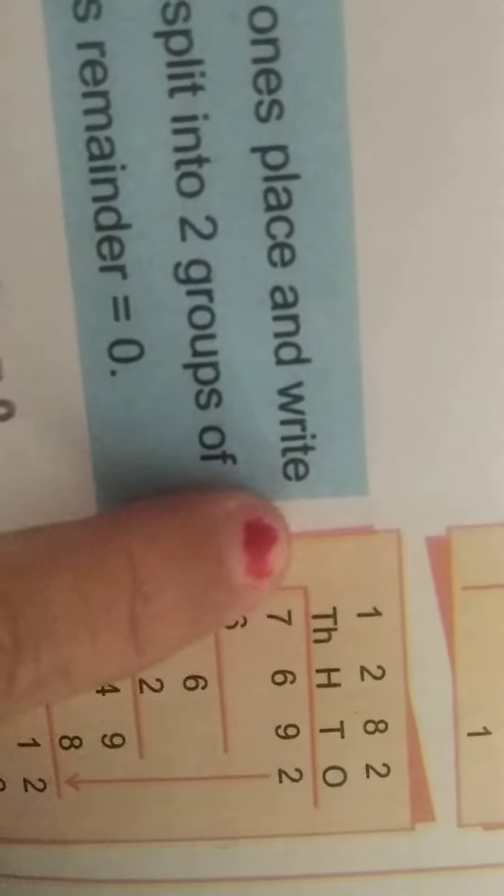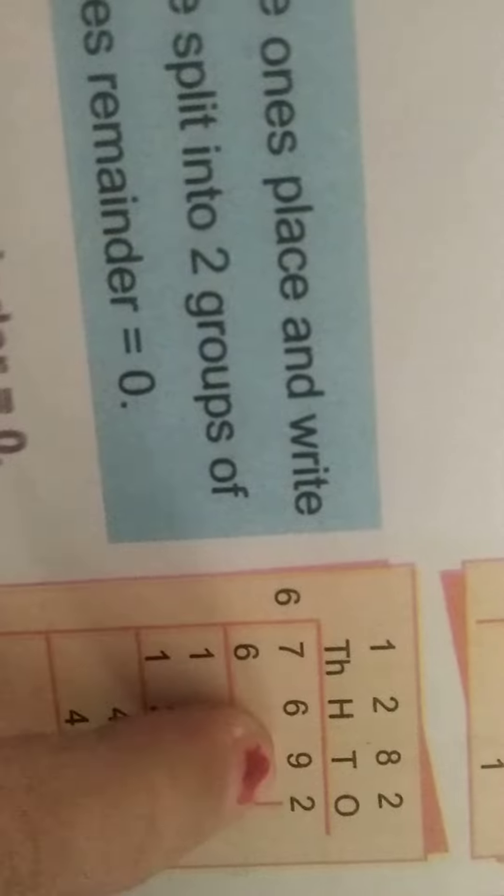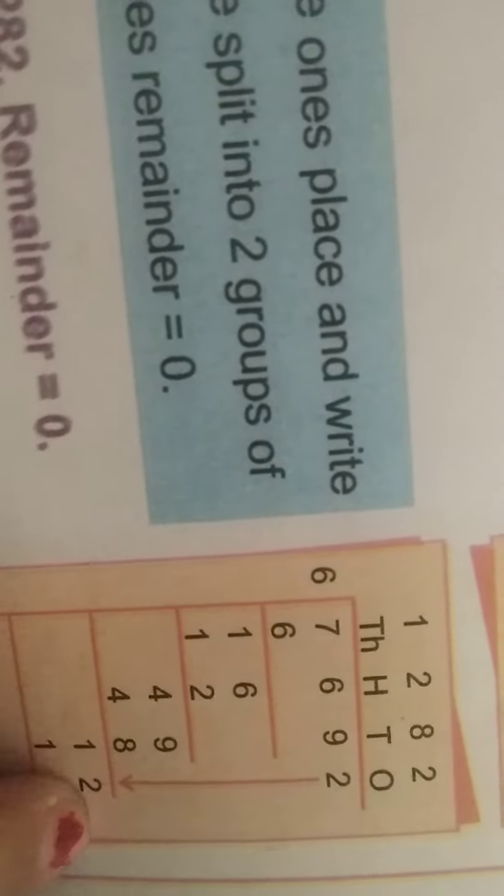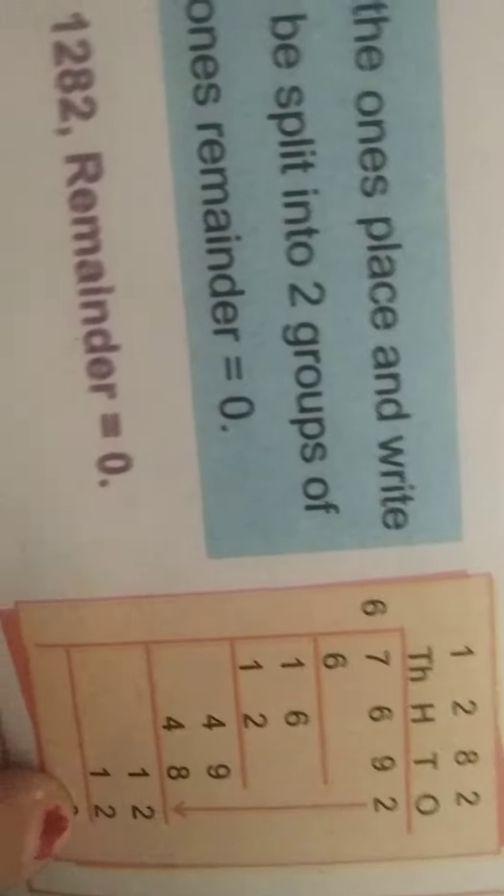To recap: 7 minus 6 equals 1. Bringing down the hundreds gives 16. 6 times 2 is 12, leaving 4. Bringing down the tens gives 49. 6 times 8 is 48, remainder 1. Bringing down the ones gives 12. 6 times 2 is 12, remainder 0.